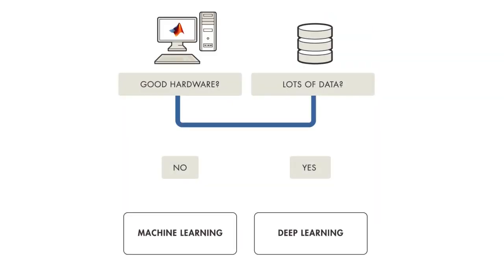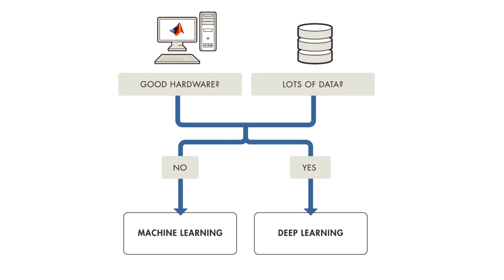When choosing between machine learning and deep learning, you should ask yourself whether you have a high-performance GPU and lots of labeled data. If you don't have either of these things, you'll have better luck using machine learning over deep learning. This is because deep learning is generally more complex, so you'll need at least a few thousand images to get reliable results. You'll also need a high-performance GPU so the model spends less time analyzing those images.